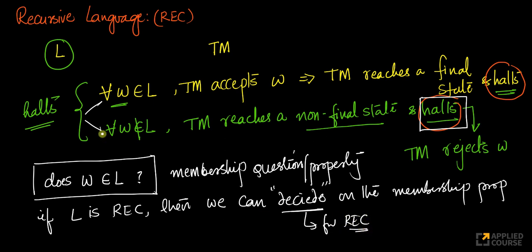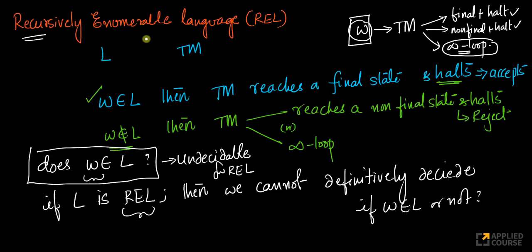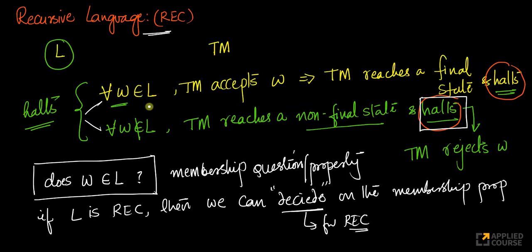The membership property is undecidable for recursively enumerable languages, while the membership property is decidable for recursive languages. This is a very important distinction between recursive languages and recursively enumerable languages, and is at the heart of the whole discussion.